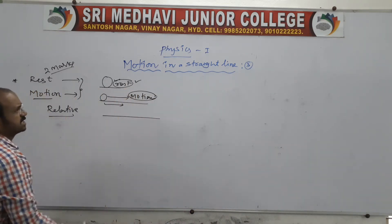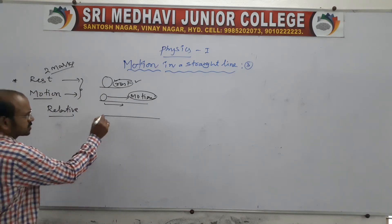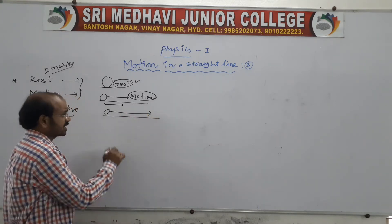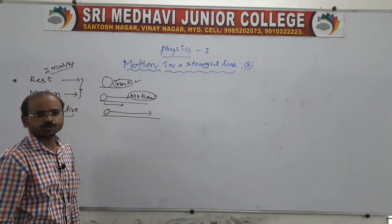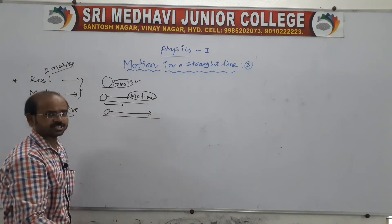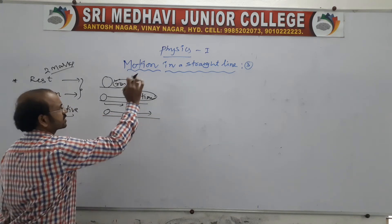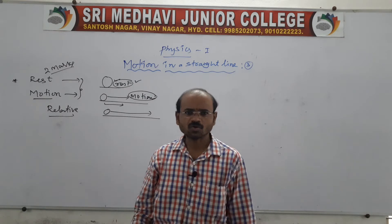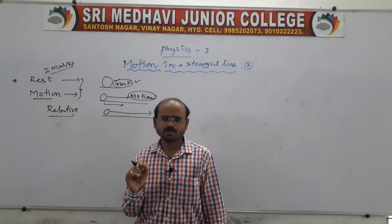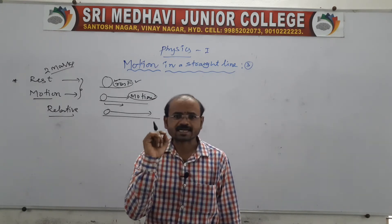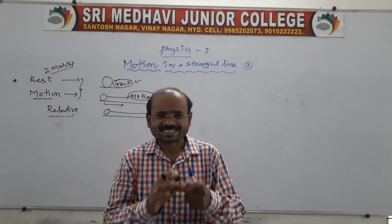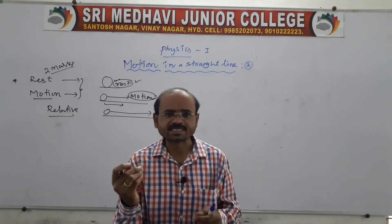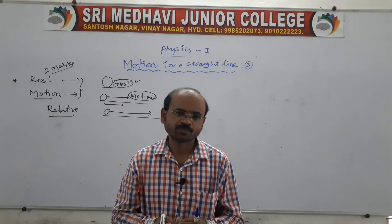Motion in a straight line means the positions of the particle, when joined by a line, form a straight line. This is also called horizontal motion, rectilinear propagation, translatory motion, or linear motion — all these terms mean the same thing.